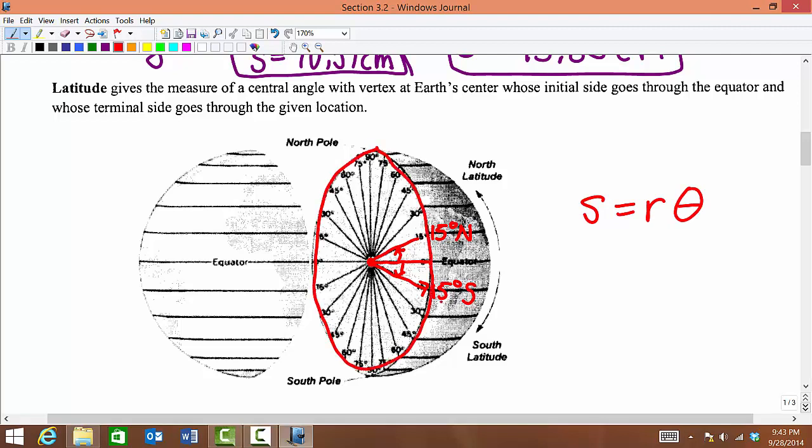As we're working with a circle and a central angle, and we know the approximate radius of the Earth, we can use our formula working with theta in radians instead of degrees to calculate distances on the Earth given a particular cross-section.